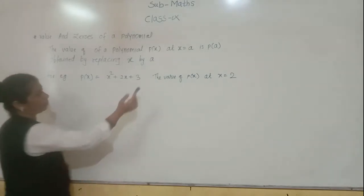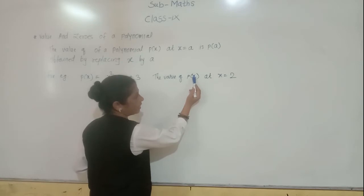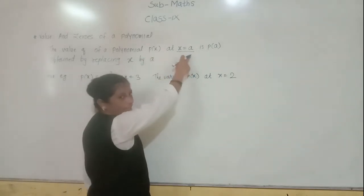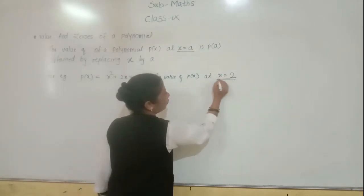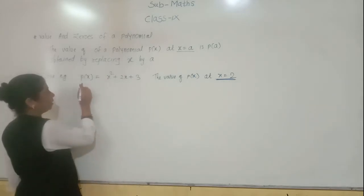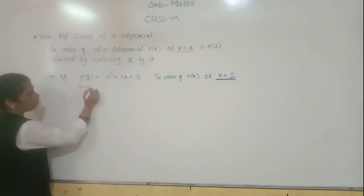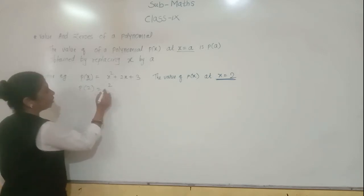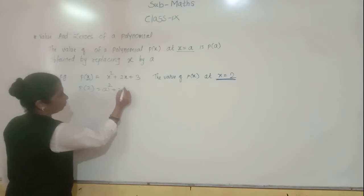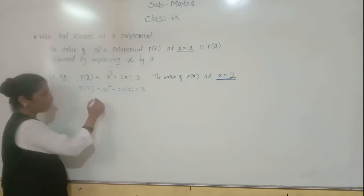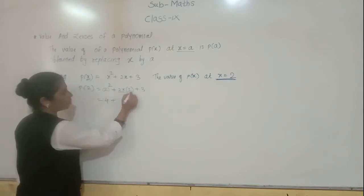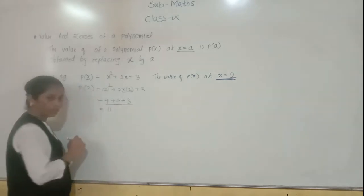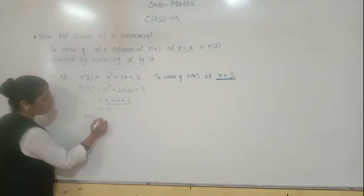Here we have to replace the value of X by 2, so like X equals to A, here A is 2. We have to find the value of the given polynomial at X equals to 2. So P of 2 equals to 2 squared plus 2 into 2 plus 3. That is 4 plus 4 plus 3. So you get 4 plus 4 is 8, and 8 plus 3 is 11. So P of 2 equals to 11. This 11 is the value of the polynomial P of X equals to X squared plus 2X plus 3 at X equals to 2.